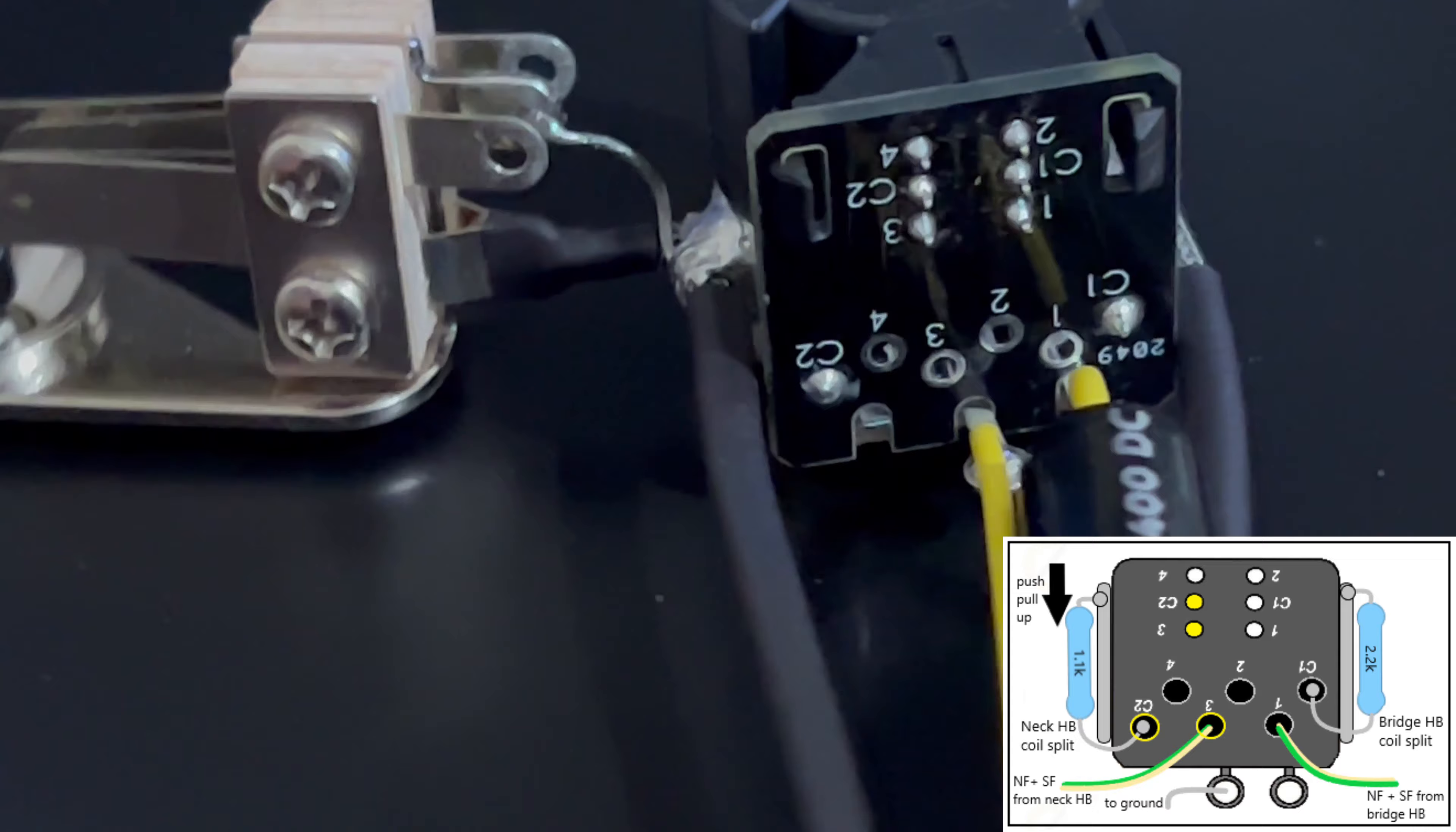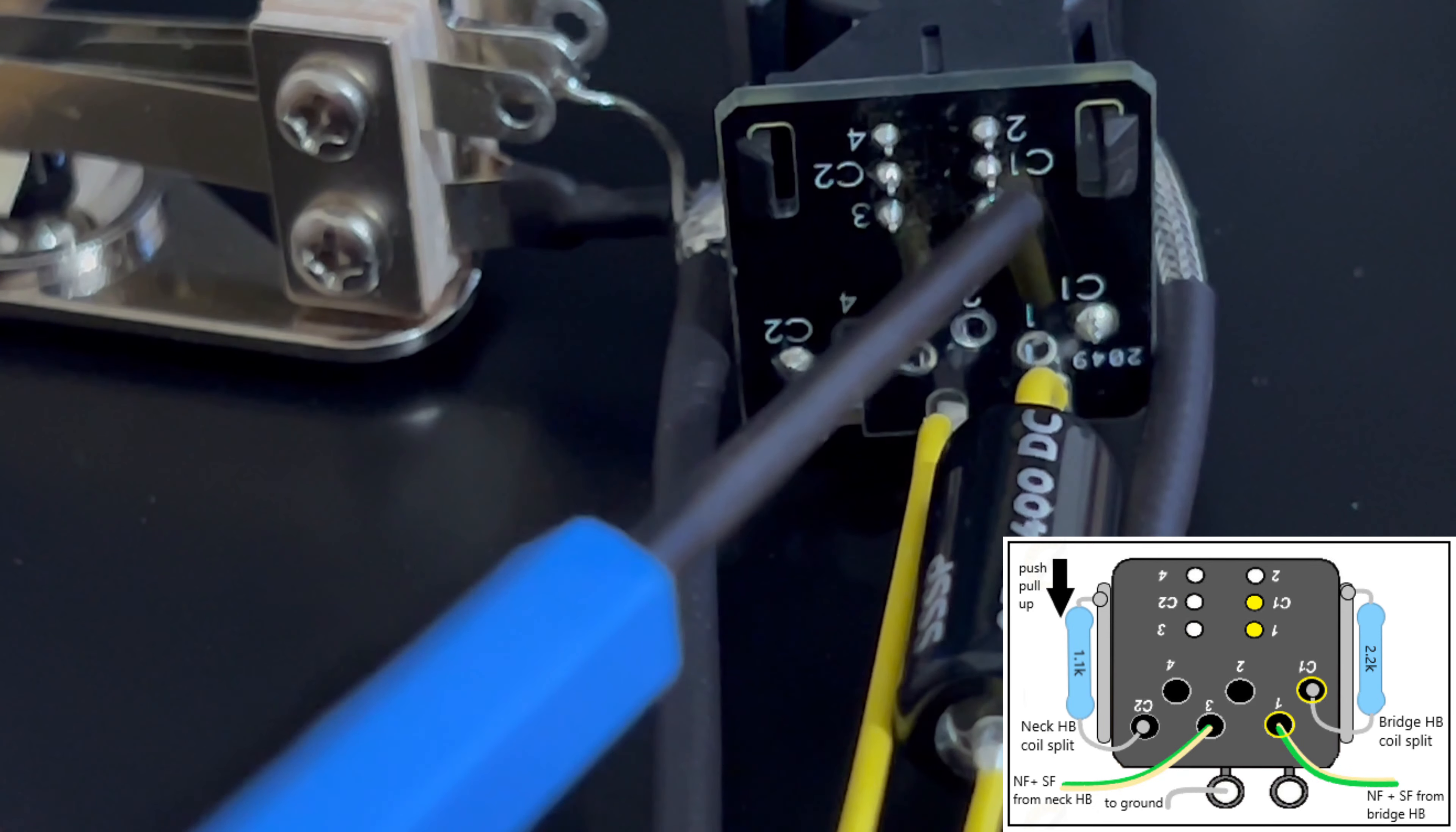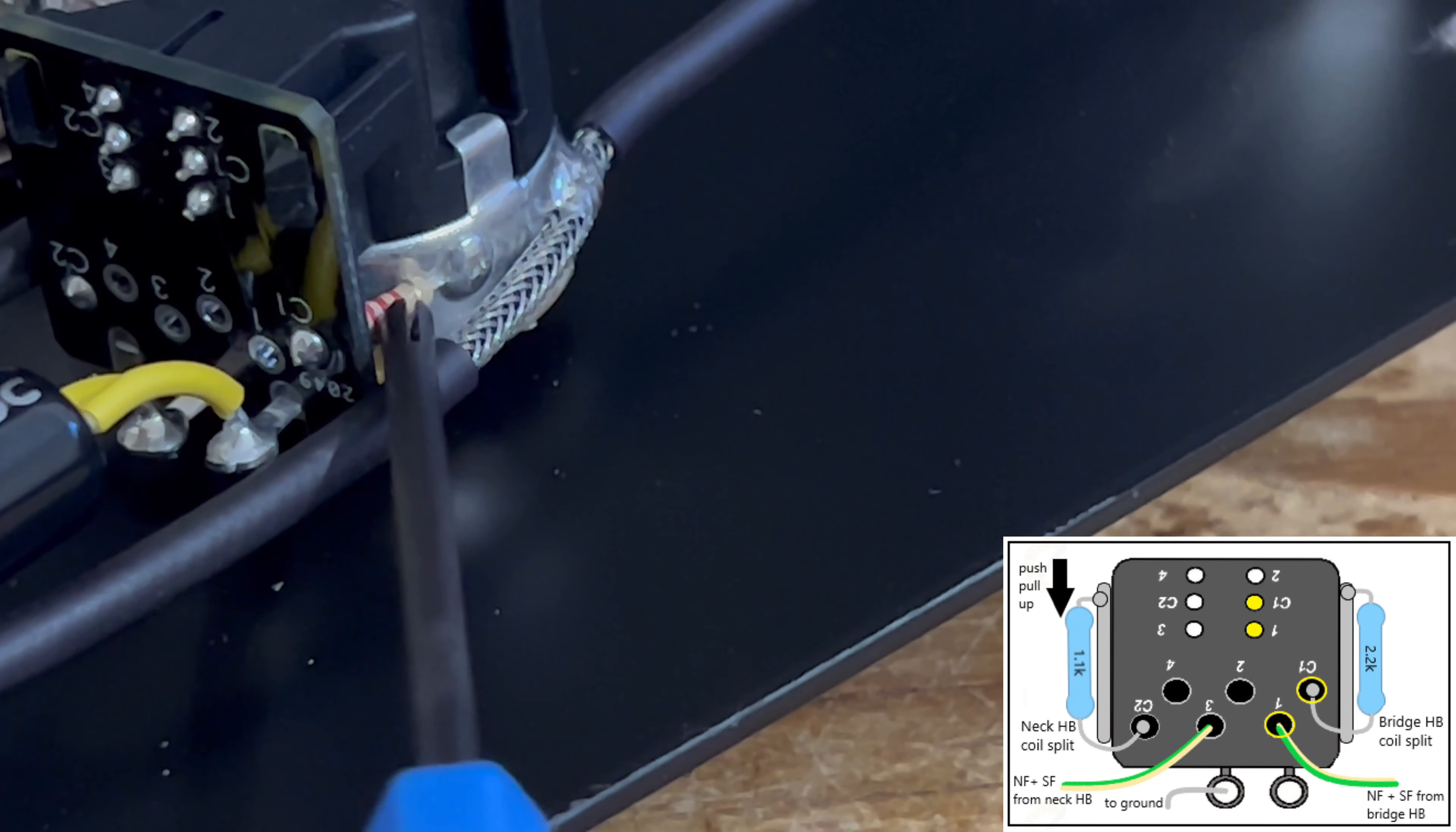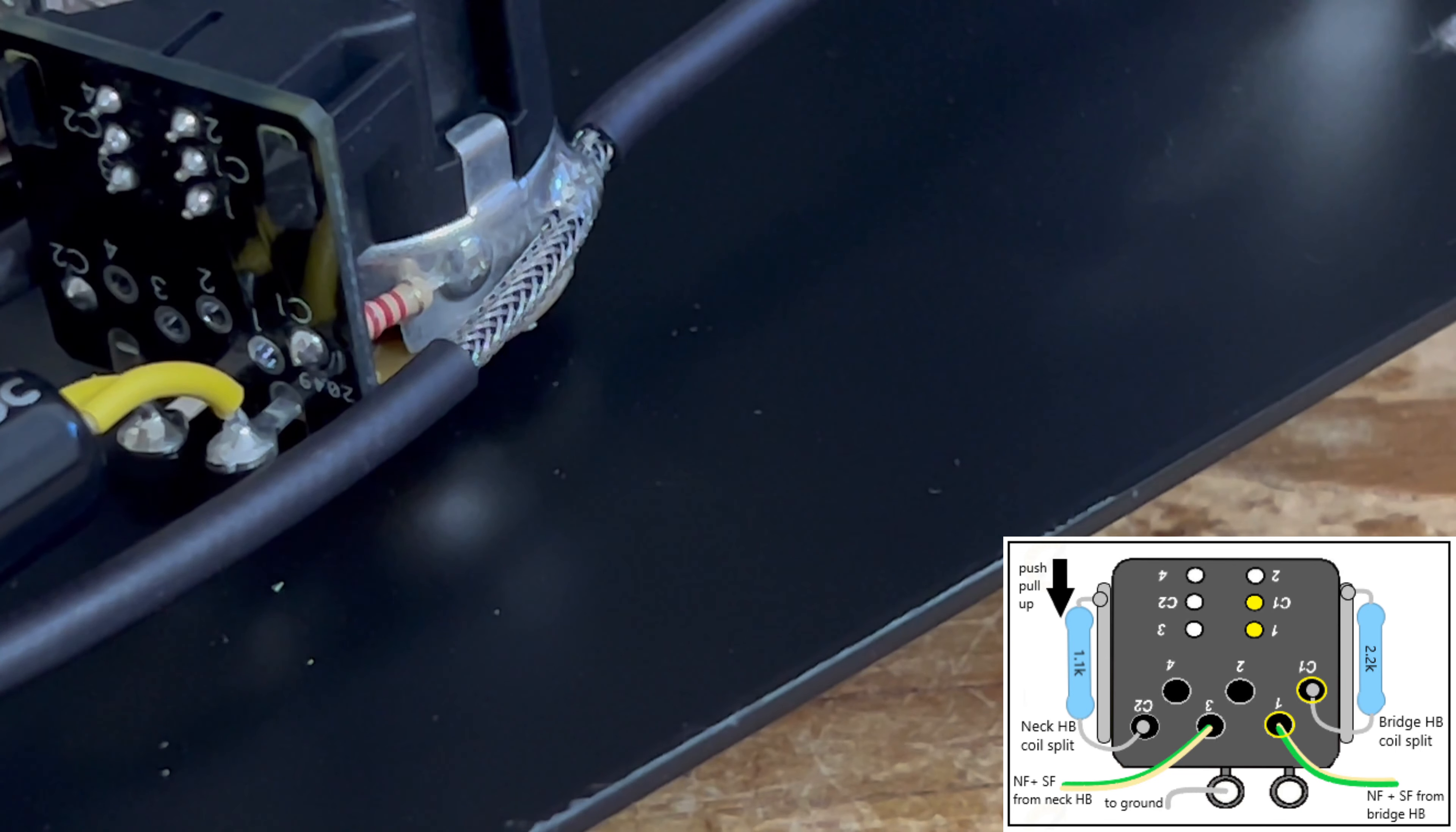And it's exactly the same on the bridge position. When the push-pull is up, the common lug, which is the resistor there on the other side, just in there, that becomes active with the north finish and the south finish, and it gets partially shorted to ground.